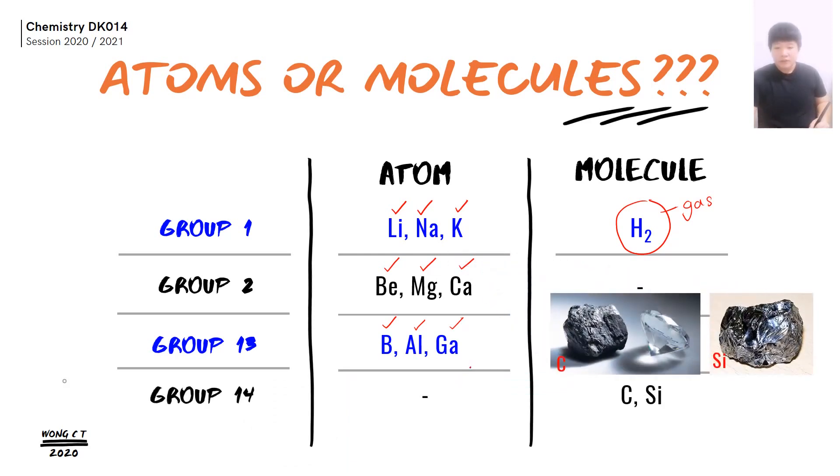While for the non-metal group 14, the elements exist in the form of molecules. The example that we have is carbon and silicon. While carbon can exist in the form of graphite and also diamond. What's the difference between graphite and diamond? Figure that out.